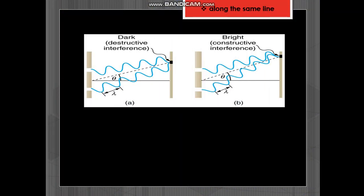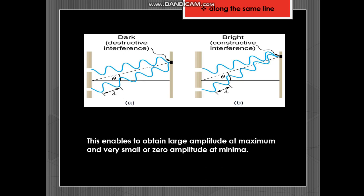Along the same line. Now as we can see the two waves are in the same direction both for constructive as well as destructive interference. This enables to obtain large amplitude at maximum and very small or zero amplitude at minimum. And hence the interference pattern is clear and distinct.